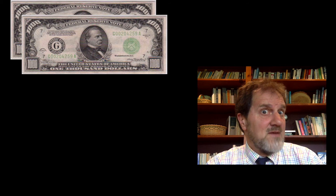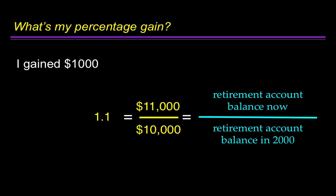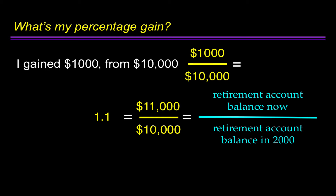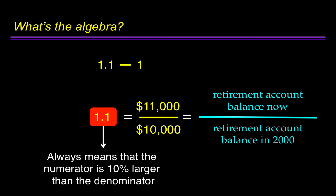These examples have been pretty painful — I don't like to lose money. Let's say my retirement account balance now is $11,000 while it was $10,000. That produces a ratio of 1.1. What's my percentage gain? I gained $1,000 from $10,000, or 1,000 over 10,000 is 0.1, or 10%. That information is contained in the ratio of 1.1 — a ratio of 1.1 always means the numerator is 10% larger than the denominator. The algebra: 1.1 minus 1 equals 0.1, or 10%.